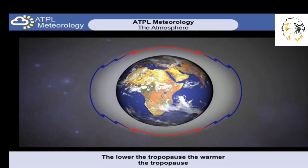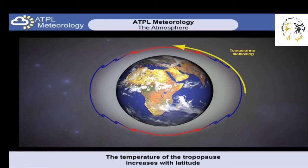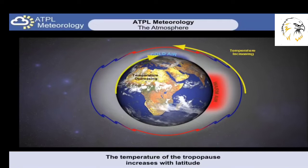If we know that temperature decreases with height, then it follows that the closer the tropopause is to the Earth, the warmer it will be. Over the poles, the tropopause temperature is about minus 50 degrees Celsius, and over the equator it's minus 80 degrees Celsius. As we can see, at the tropopause, temperature increases with latitude. Of course, this is the opposite from what happens at the surface, where temperature decreases with latitude.